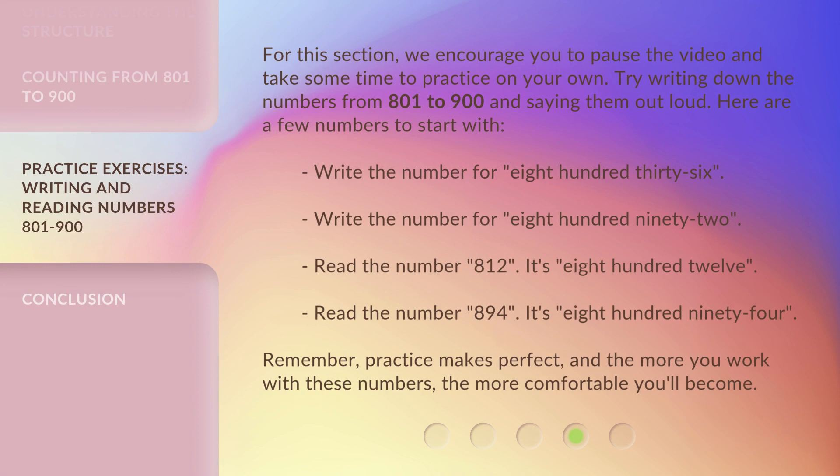For this section, we encourage you to pause the video and take some time to practice on your own. Try writing down the numbers from 801 to 900 and saying them out loud. Here are a few numbers to start with: Write the number for eight hundred thirty-six. Write the number for eight hundred ninety-two. Read the number 812. It's eight hundred twelve. Read the number 894. It's eight hundred ninety-four. Remember, practice makes perfect, and the more you work with these numbers, the more comfortable you'll become.